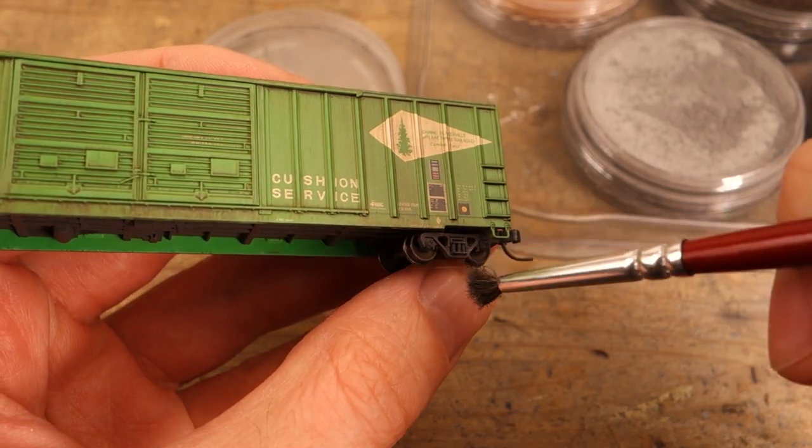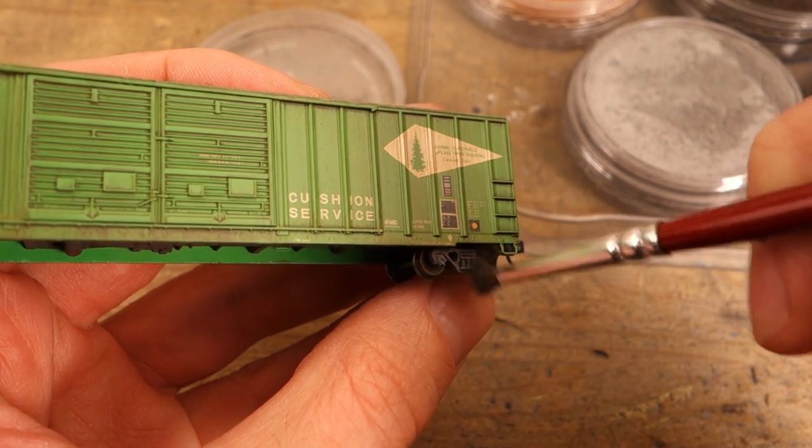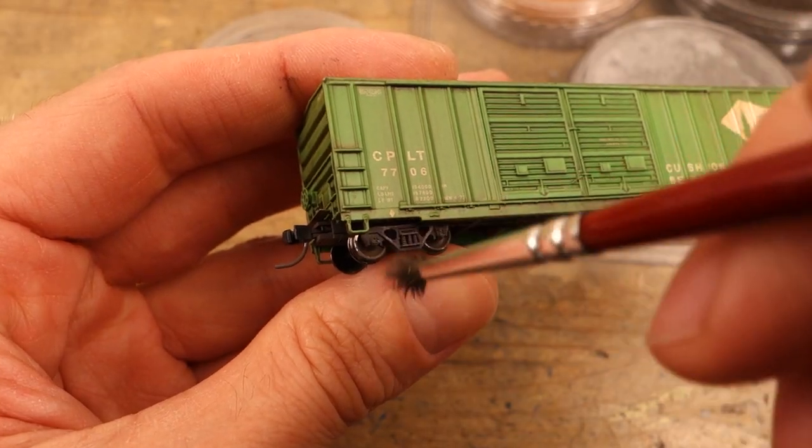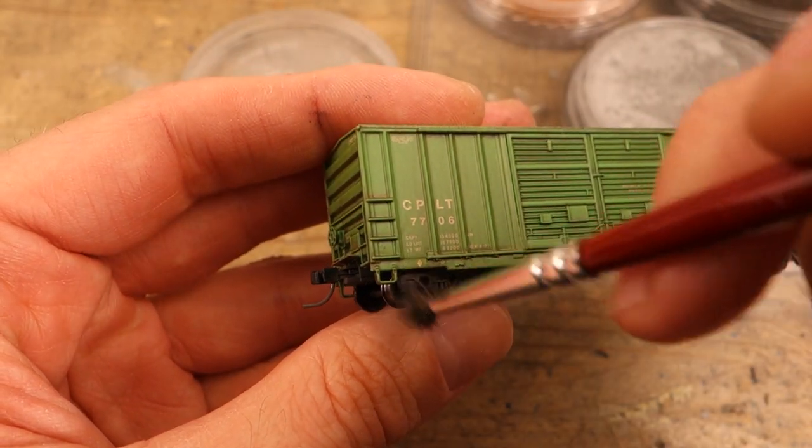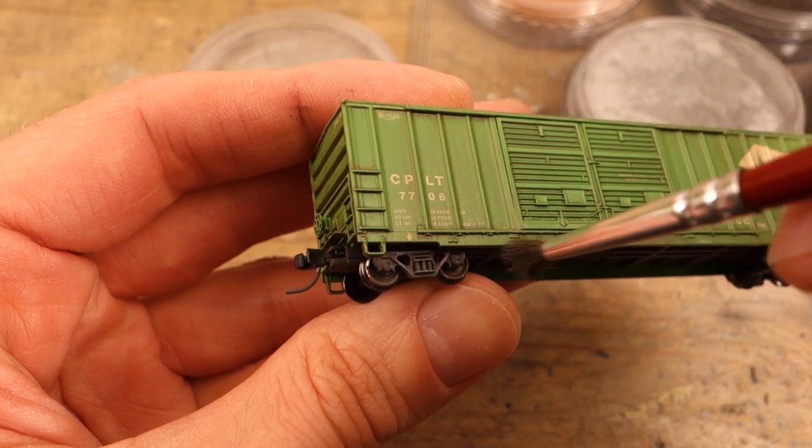After the paint had dried I brushed a little bit of Pan Pastel 820.5 Neutral Grey on the sides of the trucks to highlight the details. Finally I sealed everything with a coat of Tamiya XF85 Flat Clear.